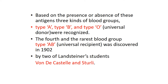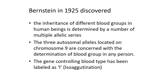The fourth and rarest blood group, Type AB, was discovered in 1902 by two of Landsteiner's students, Von de Castle and Schrödinger. Bornstein in the year 1925 discovered the inheritance of the ABO blood group system. According to him, the ABO blood group system is a multiple allelic trait. There are three autosomal alleles located on chromosome 9, concerned with the determination of blood group in any person.